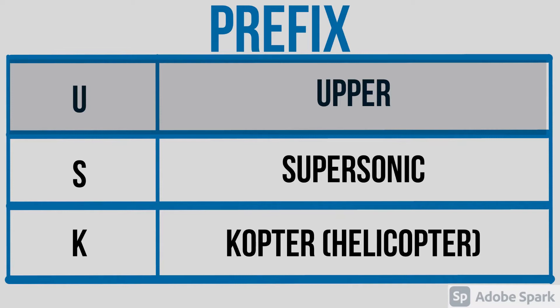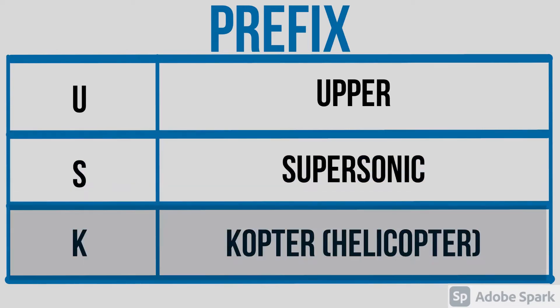Letter S, or Sierra, stands for supersonic, which means that that particular airway is to be used exclusively by supersonic aircraft during acceleration, deceleration, and while in supersonic flight. And last, letter K, or Kilo, indicates a low-level route established for use primarily by helicopters.